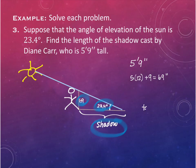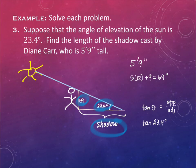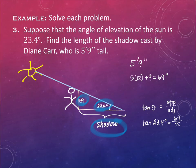Tangent of an angle is opposite over adjacent. Our angle is 23.4 degrees, the opposite is 69, and the adjacent - the shadow - is what we don't know. Call it X. So tangent of 23.4 degrees equals 69 over X.